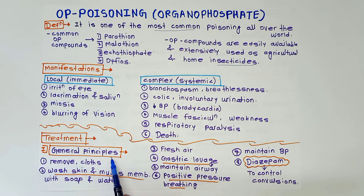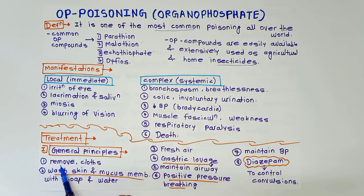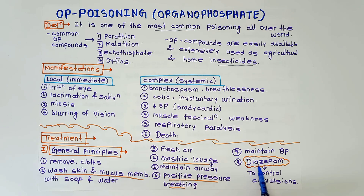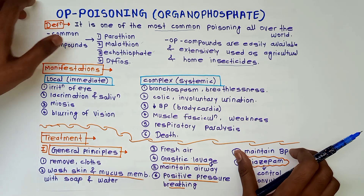Treatment includes two important parts: general principles and specific antidote. For general principles, when a patient with organophosphate poisoning comes to the OPD, first remove clothes, then wash skin and mucous membranes with soap and water, provide fresh air, perform gastric lavage until the returning fluid is clear, maintain airway, use positive pressure breathing if required, maintain blood pressure, and administer diazepam to control convulsions. Diazepam is the important drug used to control convulsions in organophosphate poisoning.